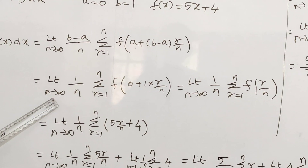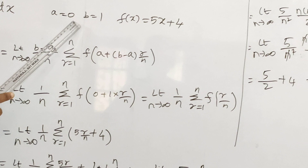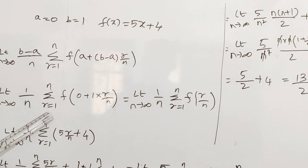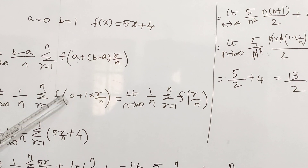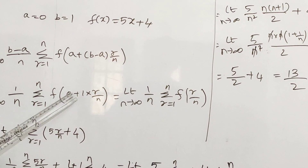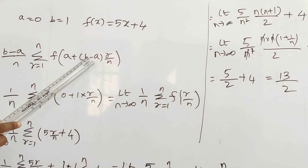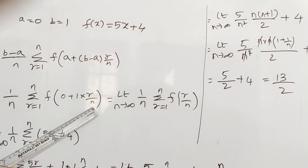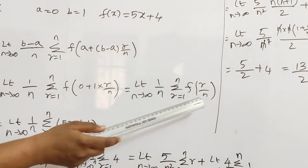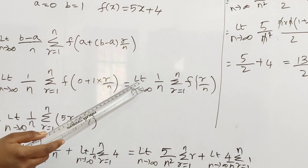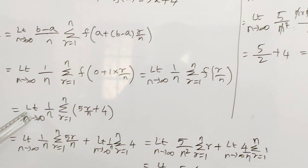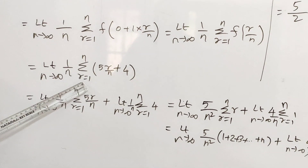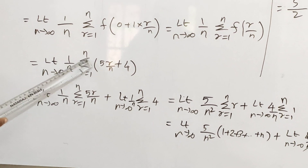So limit n tends to infinity, b minus a = 1 minus 0 = 1, so 1 by n, summation r equal to 1 to n, f of (a = 0 plus (b minus a = 1 minus 0) into 1 times r by n). So 0 plus r by n gives r by n. So next is limit n tends to infinity, 1 by n, summation r equal to 1 to n.